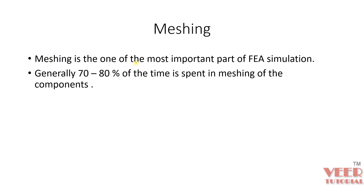Meshing is one of the most important parts of finite element simulation. Whenever you are going to perform any simulation, meshing is one of the most important parts, and generally 70 to 80% of the time is spent in meshing the component. Whenever we have a complex or large geometry, it is going to take a lot of time, and it is very important that we have good or very accurate meshing.